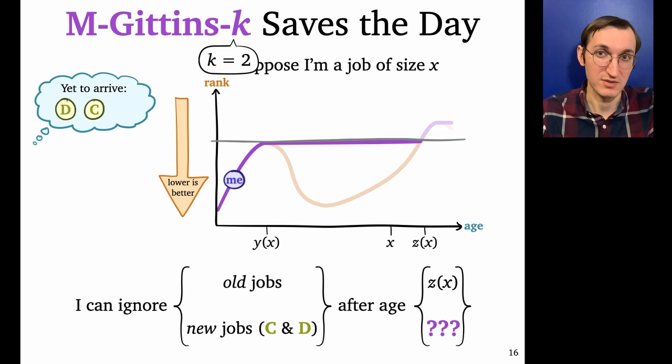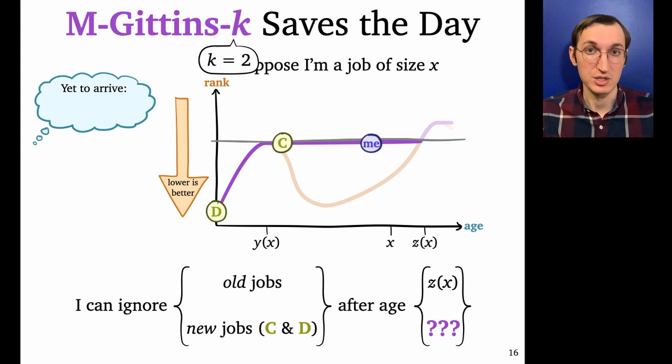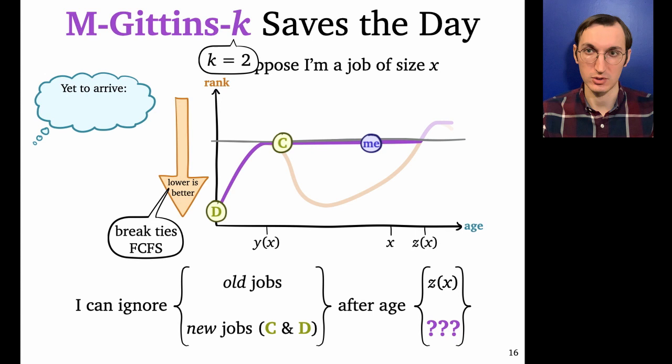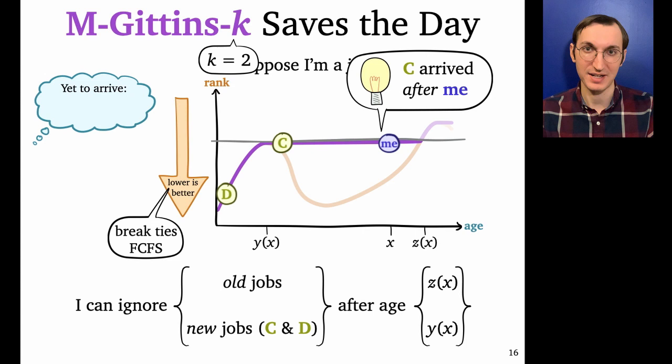So let's talk about new jobs. So I arrive, I receive some service, job C arrives, we both receive some service on the two servers, and now job D arrives. So this is the exact same scenario we just looked at. So the two jobs of best rank get served. That's going to definitely include job D. But I'm tied with C right now. Who gets service? Well, remember that we break ties in first come first serve order. And C is a new job. It arrived after me. So what that means is that I win the tiebreaker. So I and D get service.